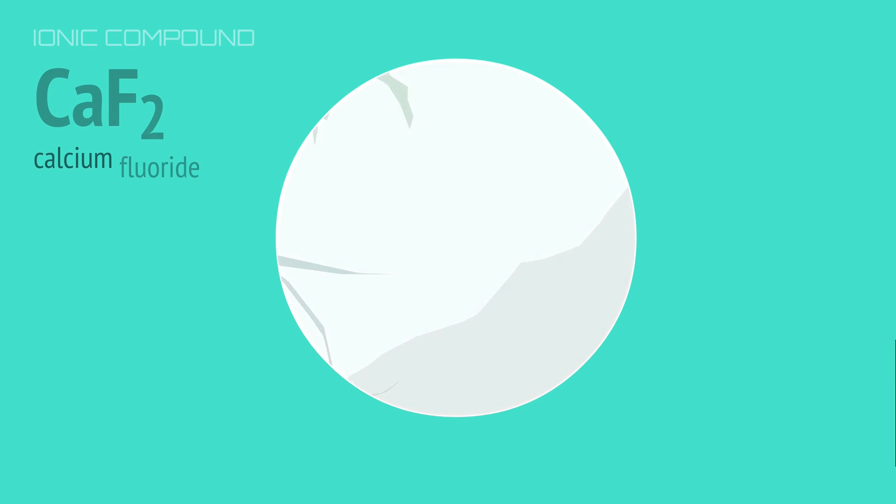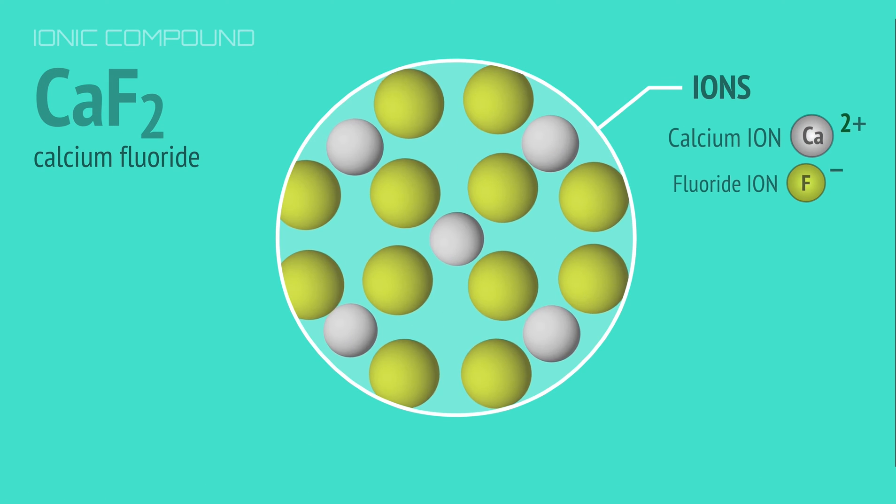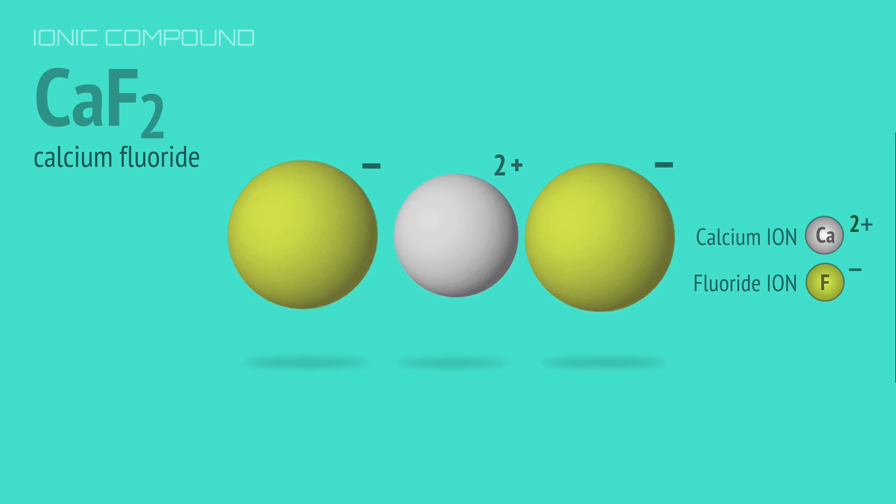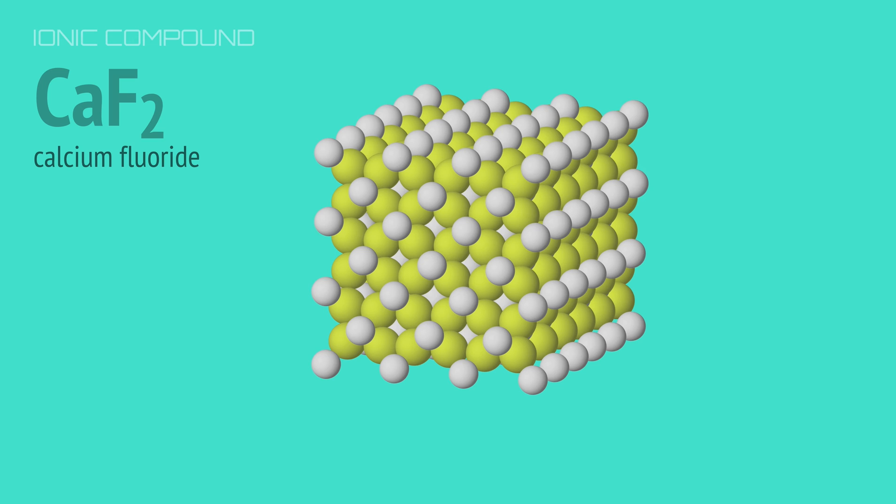Calcium fluoride is an ionic compound made of calcium ions and fluoride ions. Ions always combine in ratios that give a neutral charge. So, for every calcium ion with a 2 plus charge, there'll be two fluoride ions, each with a 1 minus charge. And this formula unit is repeated throughout the lattice, giving a one-to-two ratio of calcium ions to fluoride ions.